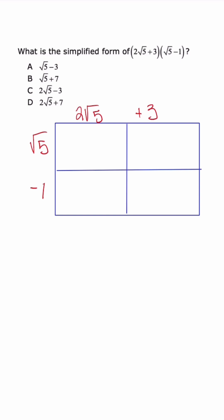When we multiply √5 times 2√5, this is just going to give us 10, right? Then when we go to the next one, 3 times √5, this is 3√5.